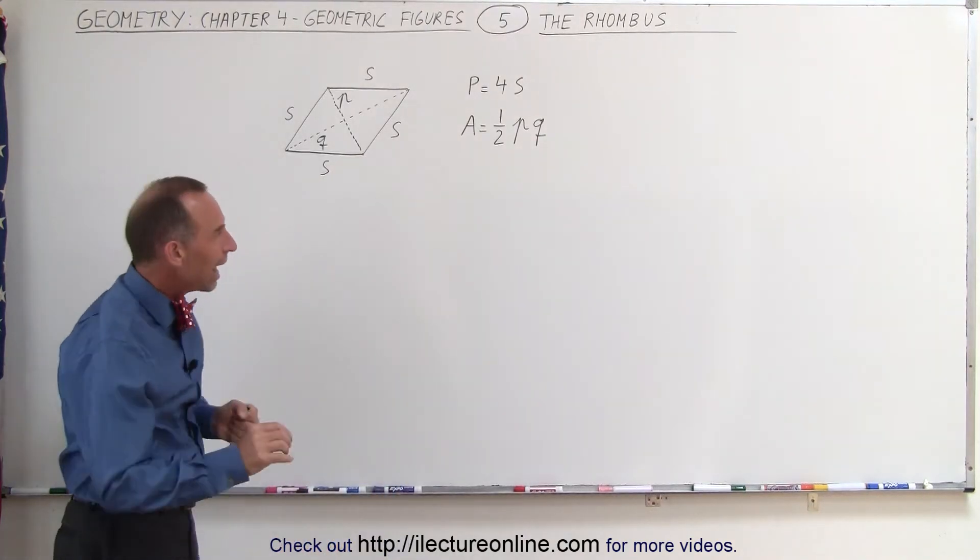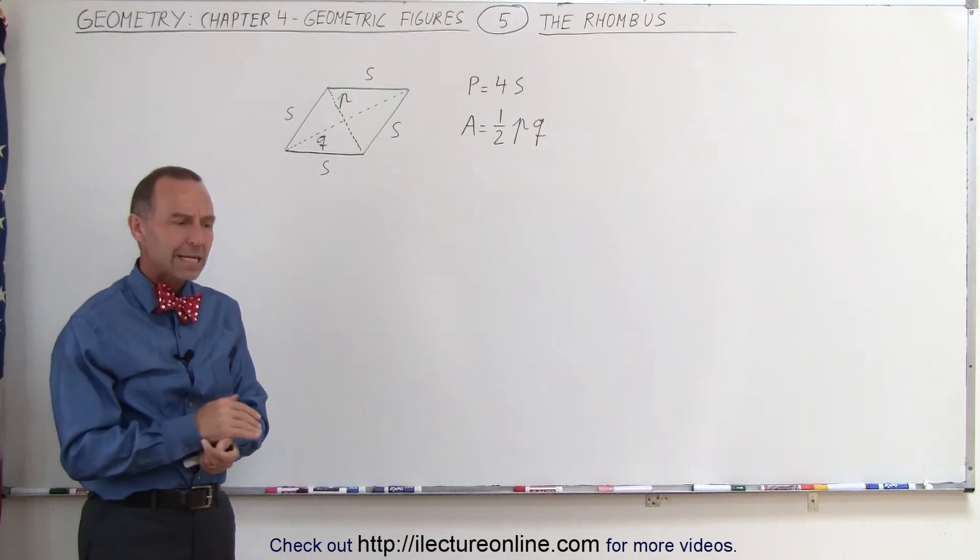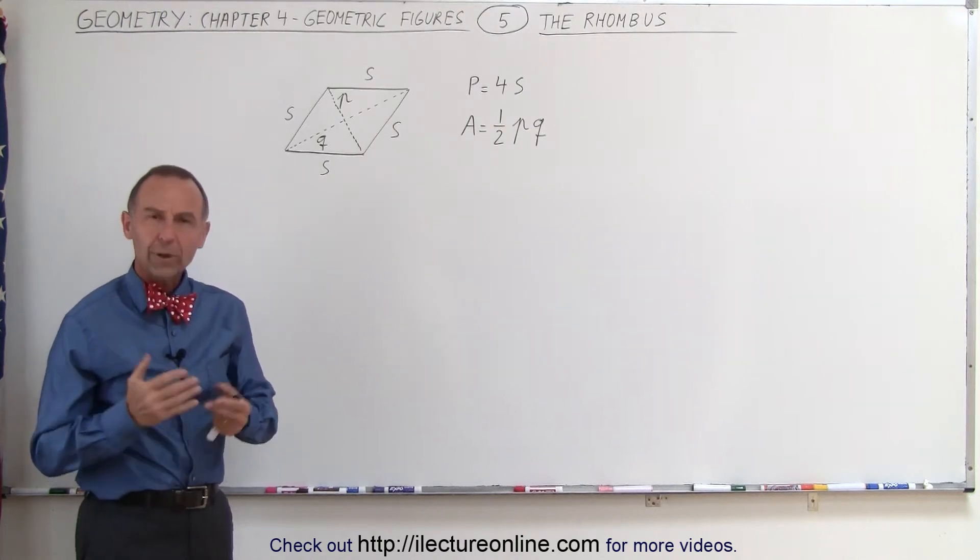But the area is one-half the product of the diagonals, P times Q. Now where did that come from?